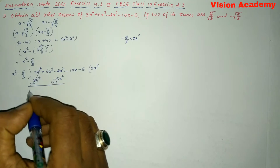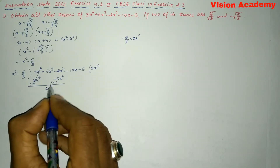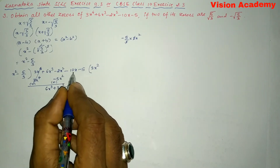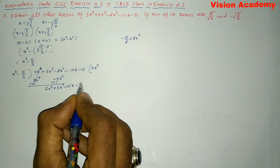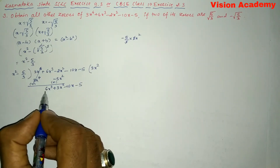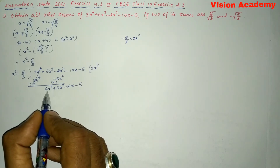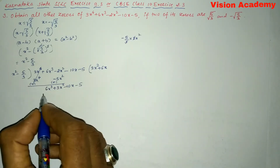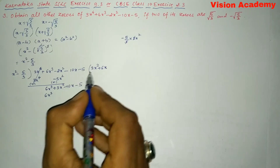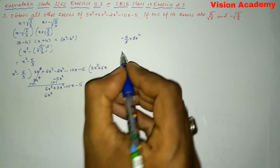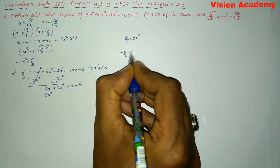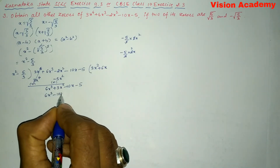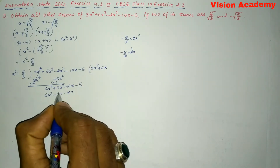Next, what do we multiply by x² to get 6x³? We multiply by 6x. So 6x × x² = 6x³, and 6x × (−5/3) = −10x. Subtracting: 6x³ − 6x³ cancels, 3x² remains, +10x − 10x cancels, and −5 carries down. This gives 0 for that column.